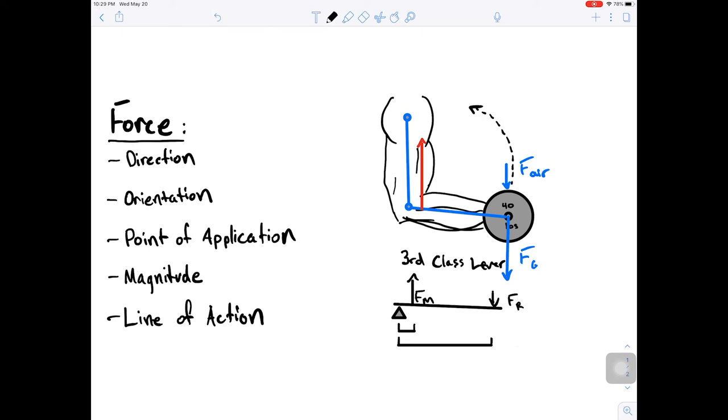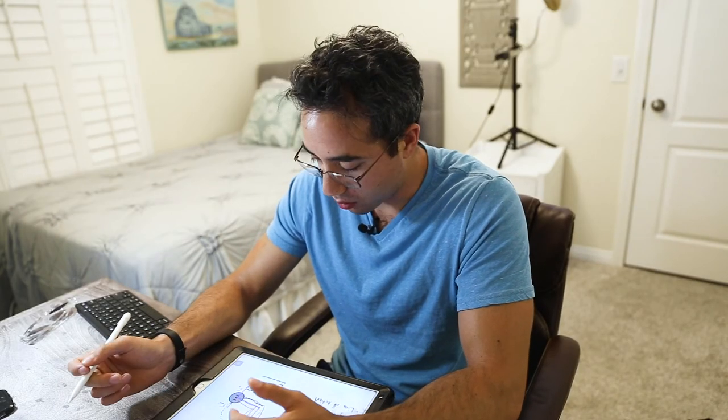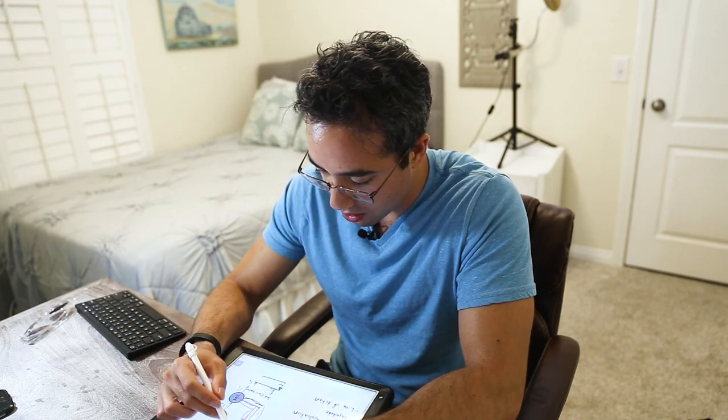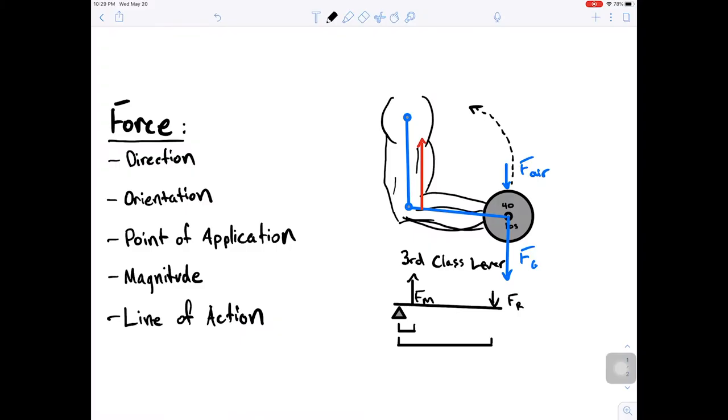So the biceps brachii is acting at a large mechanical disadvantage. So if we are going to overcome the force of gravity in reality we actually have to have a much bigger force than what I've drawn. So if I was to draw this force more to scale it would be something maybe like that.